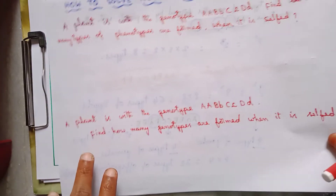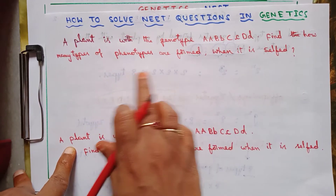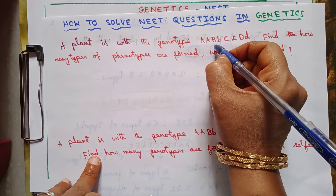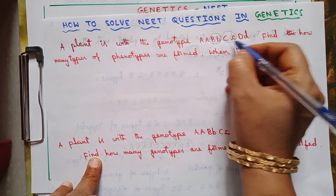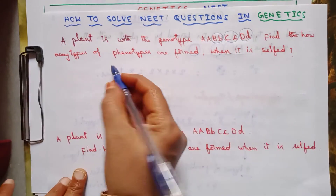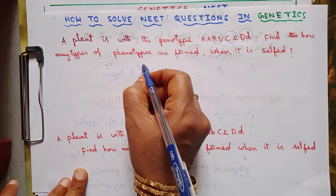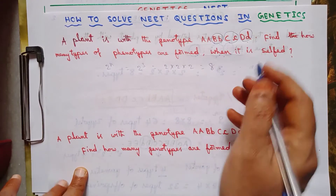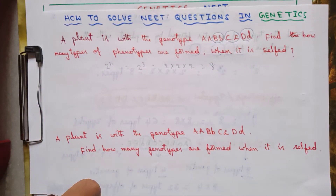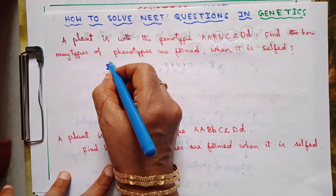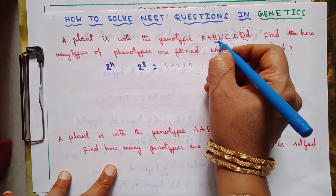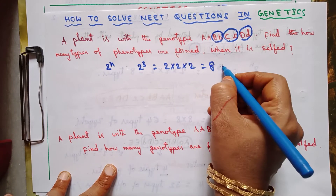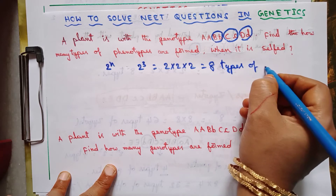Let's come back to the question. How many heterozygotes are there? 1, 2, and 3 — three heterozygotes are there in the given genotype. So using 2^n, where n = 3, we get 2^3 = 8. Eight types of phenotypes will be formed.